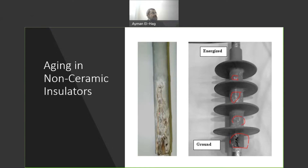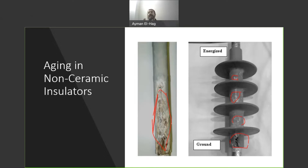This is a rod of a silicone rubber insulator and you can clearly see damages that happened to the rod. So, before we use the material or the insulator in the field, we have to make sure that they can withstand such arcing on their surface.